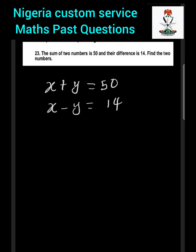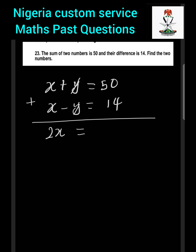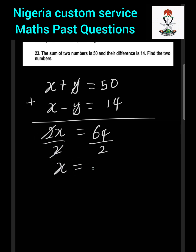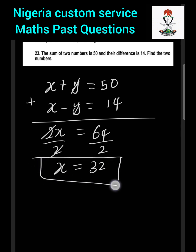To solve, we add the two equations. x plus x gives us 2x, and y plus negative y cancels out. On the right side, 50 plus 14 gives us 64. To get the value of x, we divide both sides by 2, so 2x equals 64, and x equals 64 divided by 2, which gives us 32.